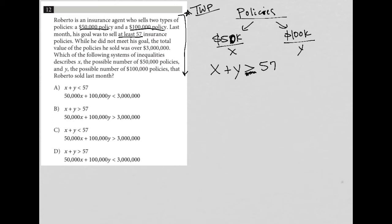The next sentence says, while he did not meet his goal. So that's where things get messed up. If he did not meet his goal, that means the number of policies he sold was less than 57. So that changes our inequality.